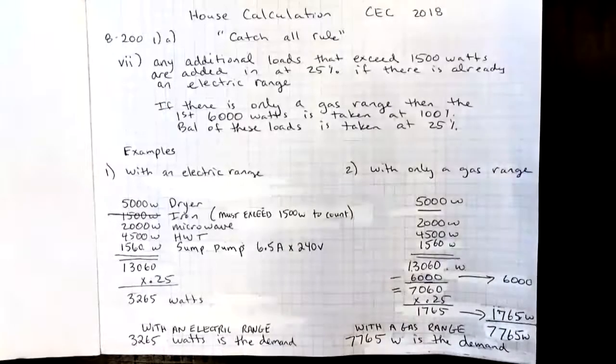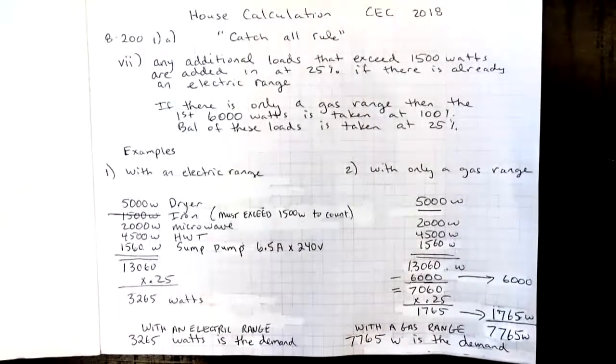In this video we're going to talk about the catch-all rule. It's 8200 1A item 7 in the Canadian Electrical Code 2018. We use this rule to determine the demand factors towards the size of our main service.